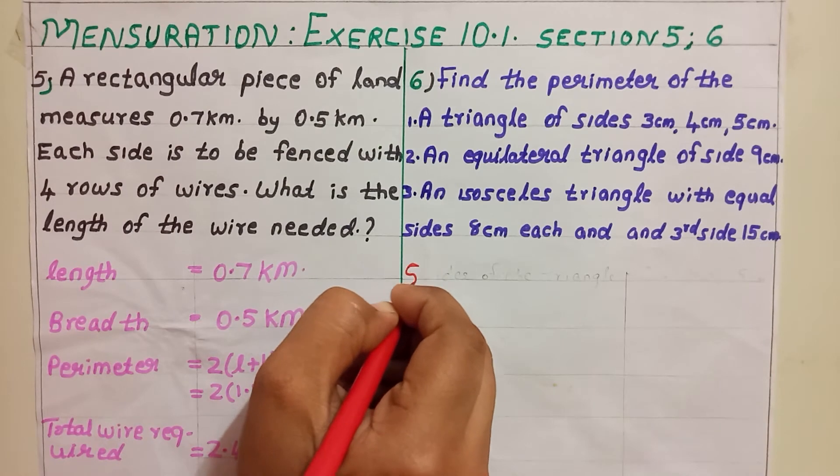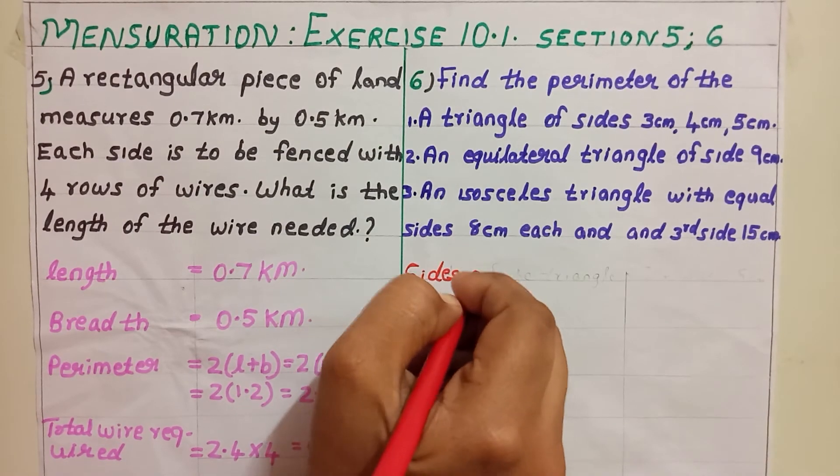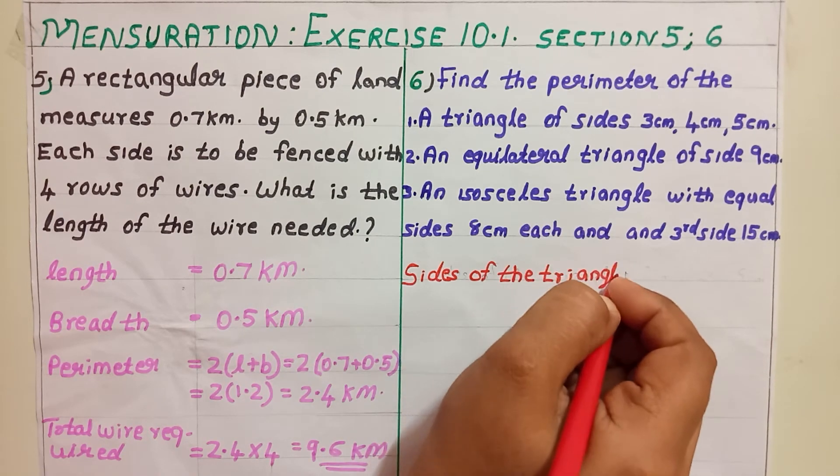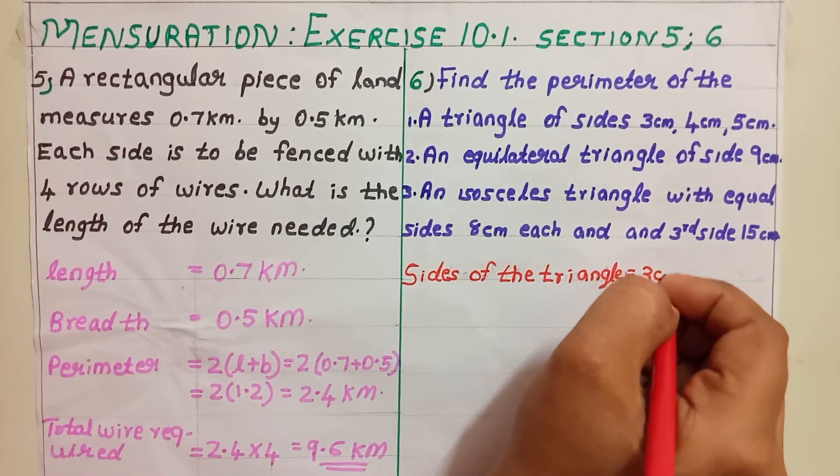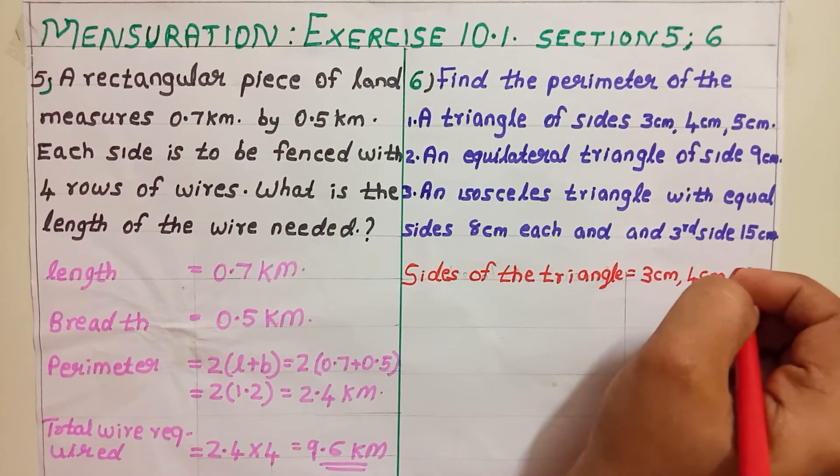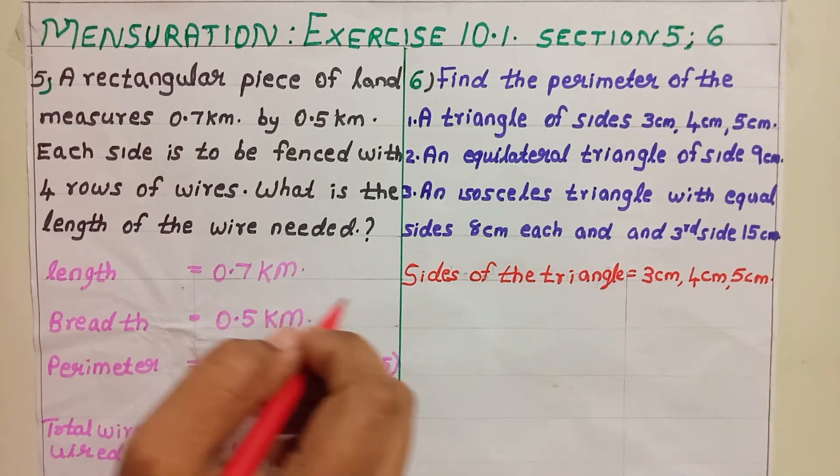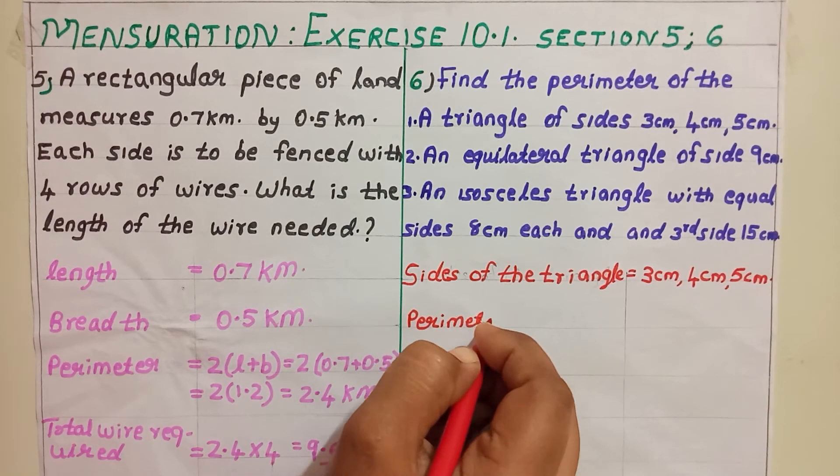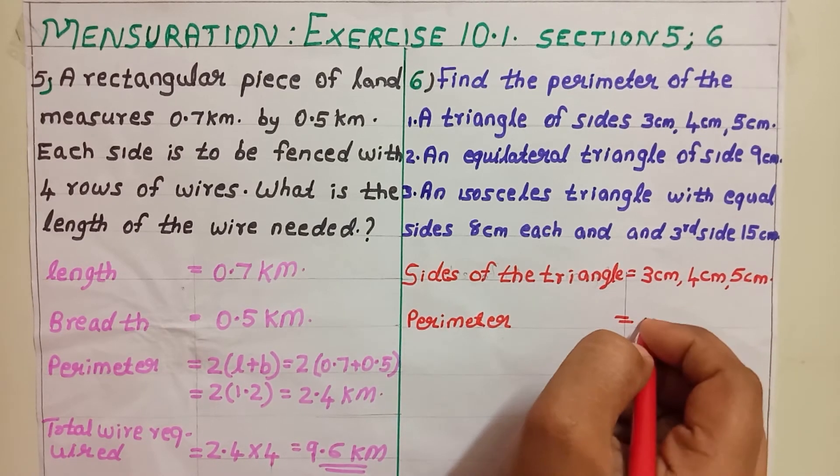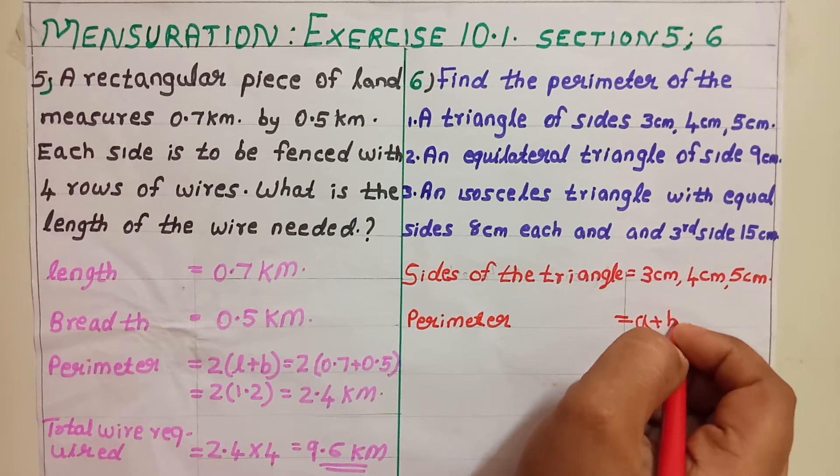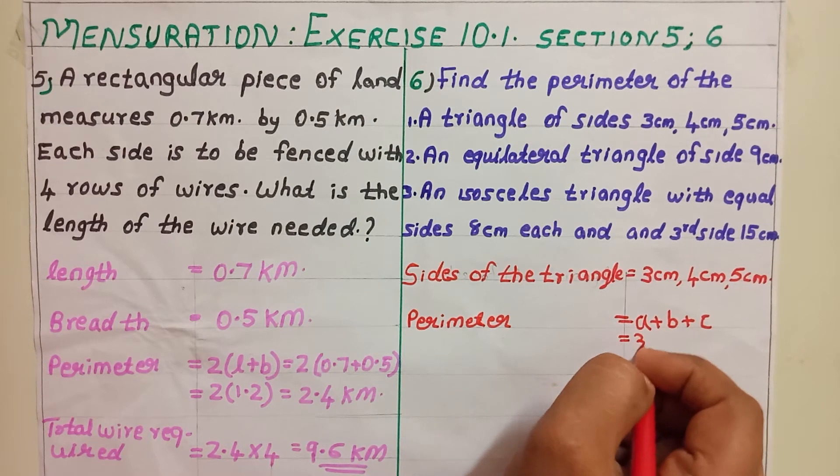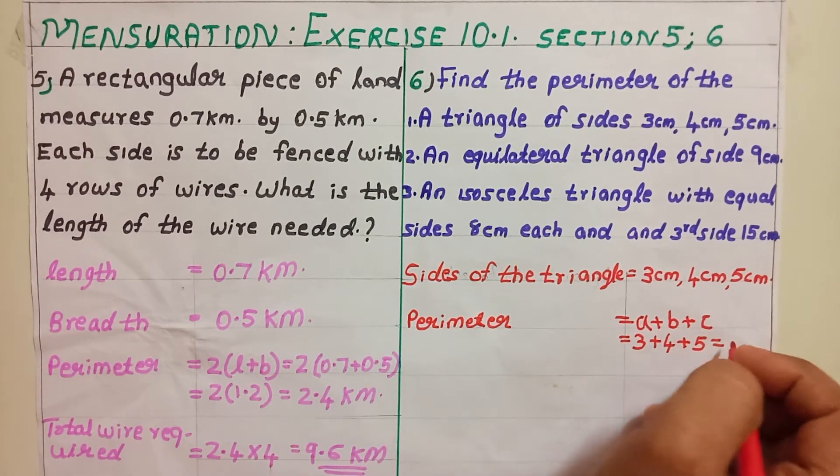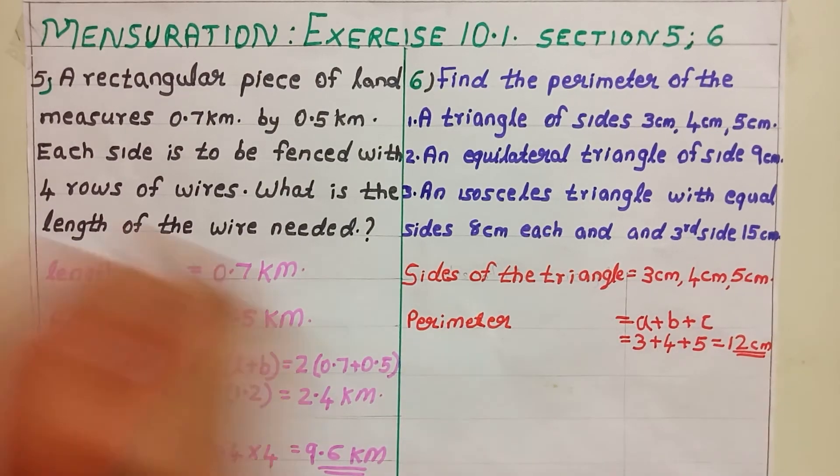Sides of the triangle equal to 3 centimeter, 4 centimeter, 5 centimeter. From this, we can conclude that perimeter equal to sum of all sides. That is equal to A plus B plus C is our formula equal to 3 plus 4 plus 5 equal to 12 centimeter.